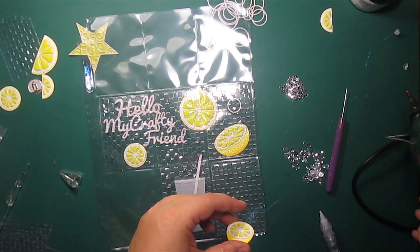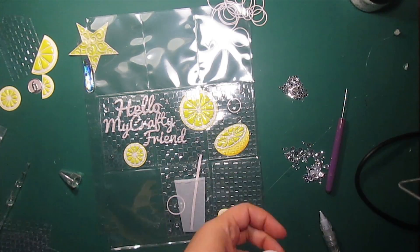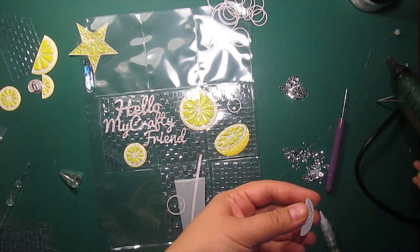Then I'm just attaching the lemon slices, ringlets, sequins and a star to the embossed acetate panels.